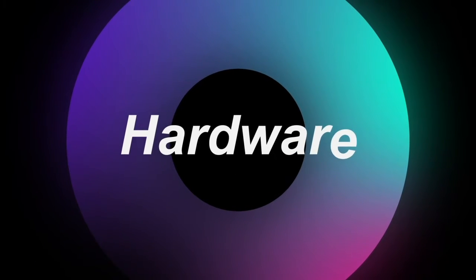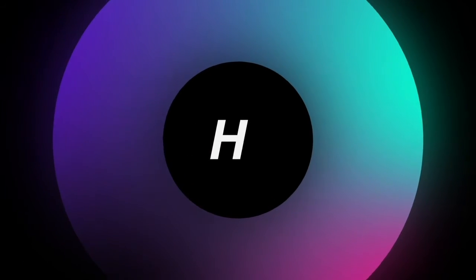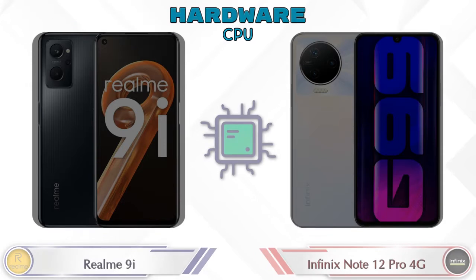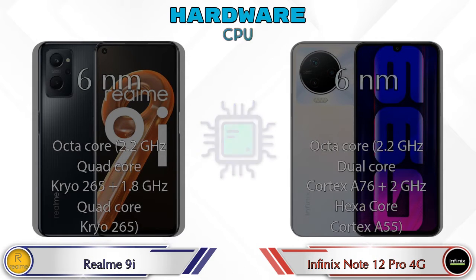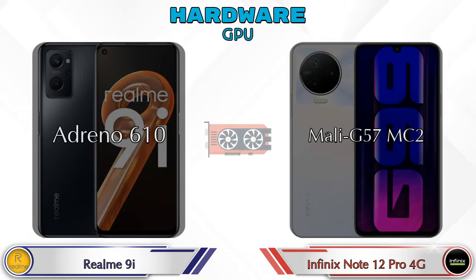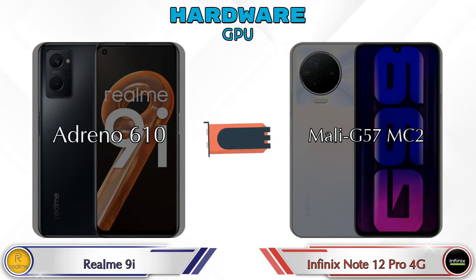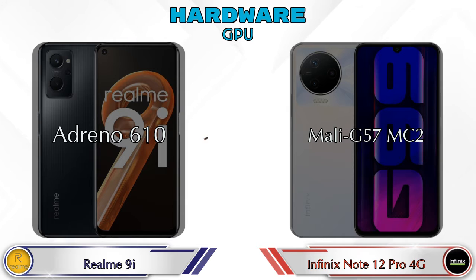First, let's talk about the most important part of the phone — hardware. Starting with the CPU details, and for GPU: Realme 9i has Adreno 610 and Infinix Note 12 Pro 4G has Mali-G57 MC2.